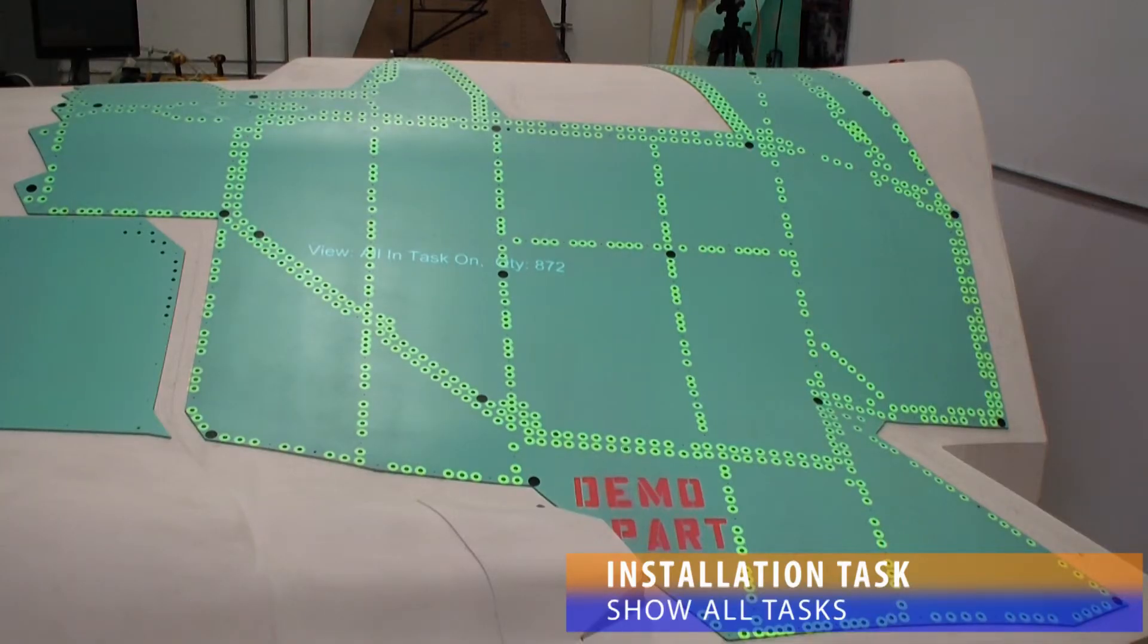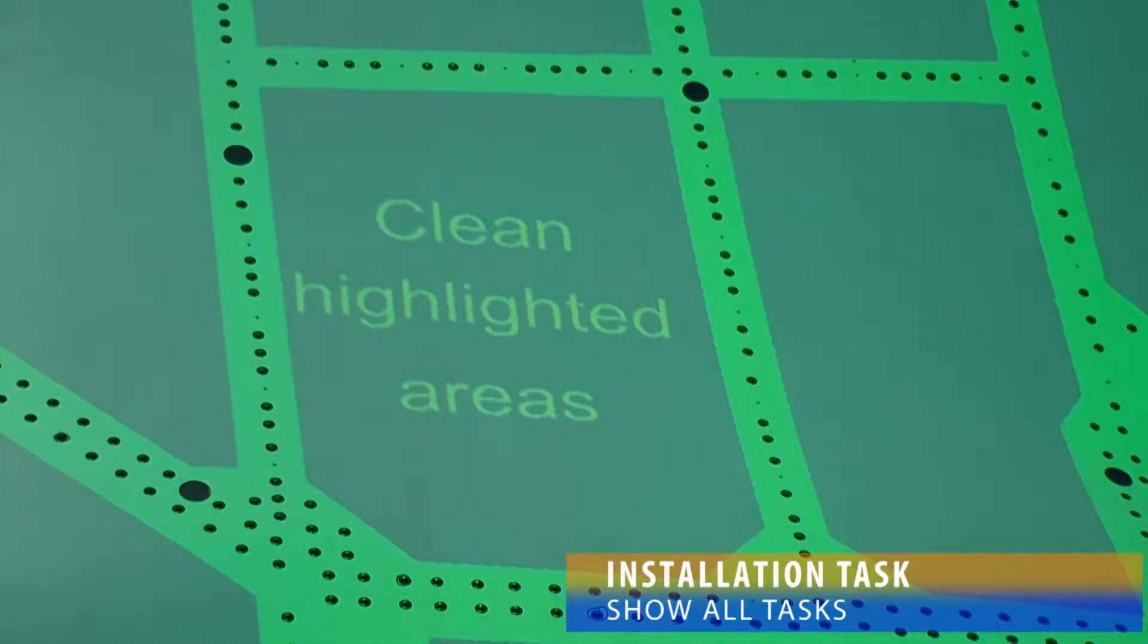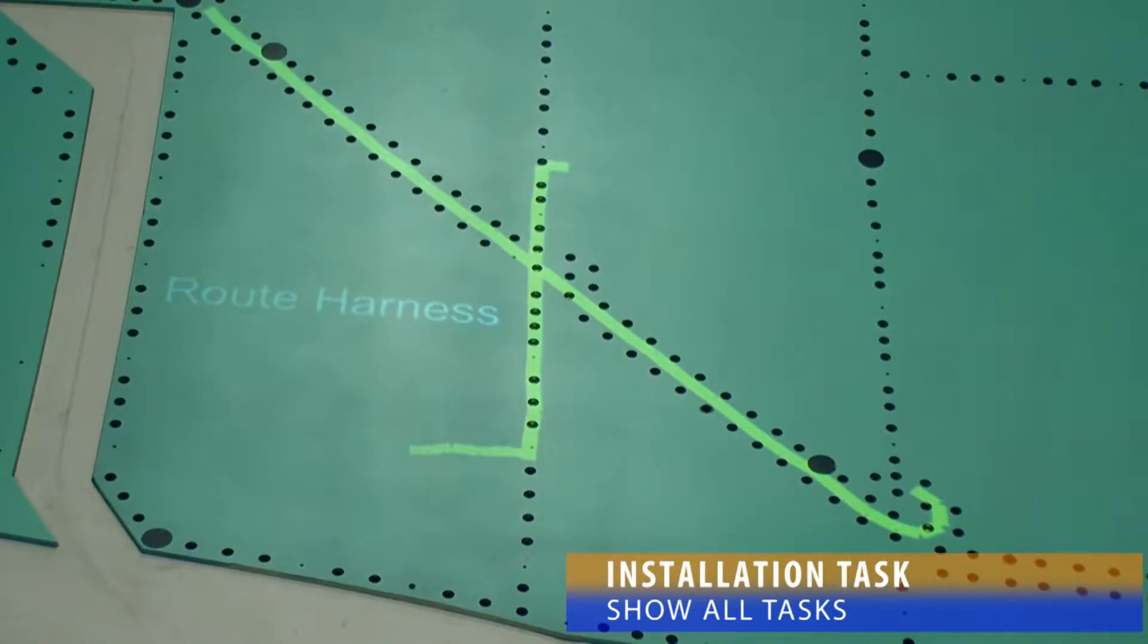Show all tasks are useful for displaying information that is easily parsed by the user in a single step. Examples of this are using the projection system as a flashlight for critical FOD checks, illuminating areas that need to be cleaned, or displaying routing paths for wire harnesses.